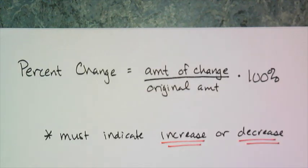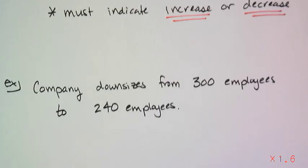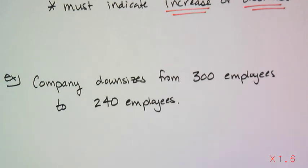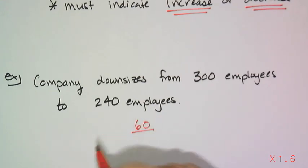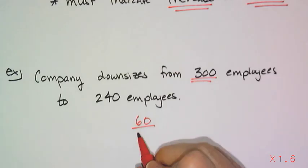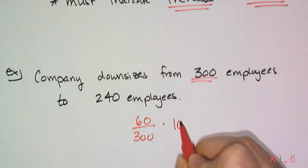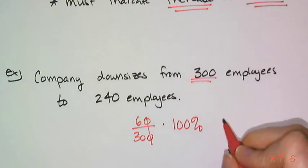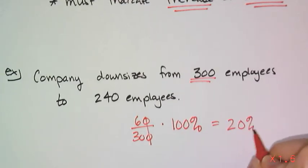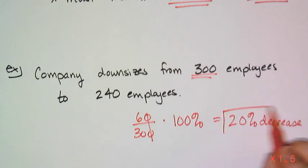For percent change you have to indicate whether it's an increase or a decrease. Example: a company downsizes from 300 employees to 240 employees. The change is 60, divided by the original amount of 300. 60 divided by 300 is one-fifth, which is 0.2 — so this is a 20% decrease because the number of employees went down.